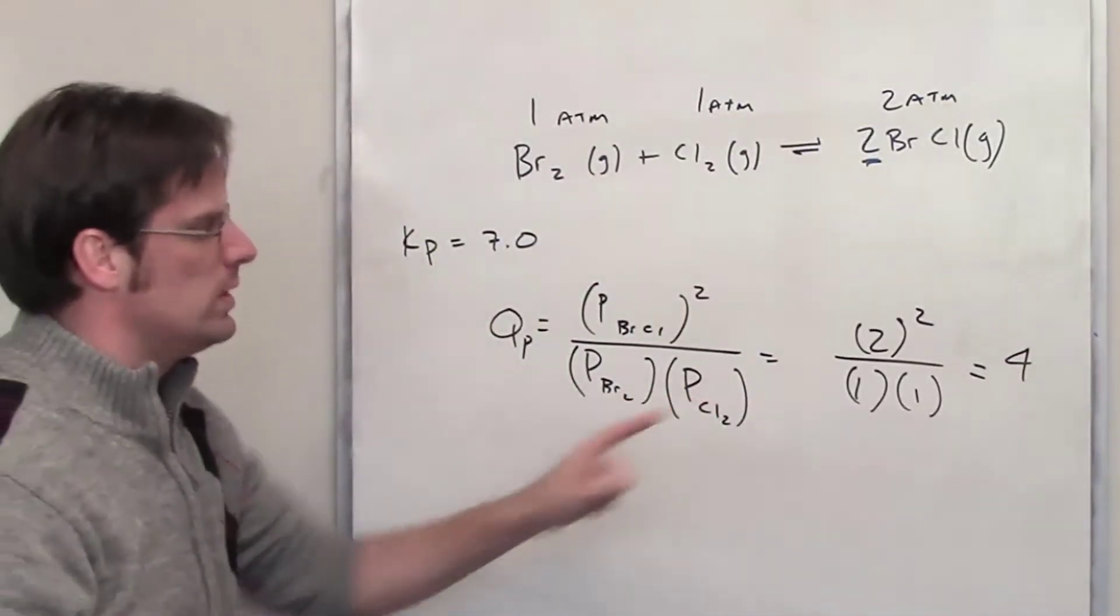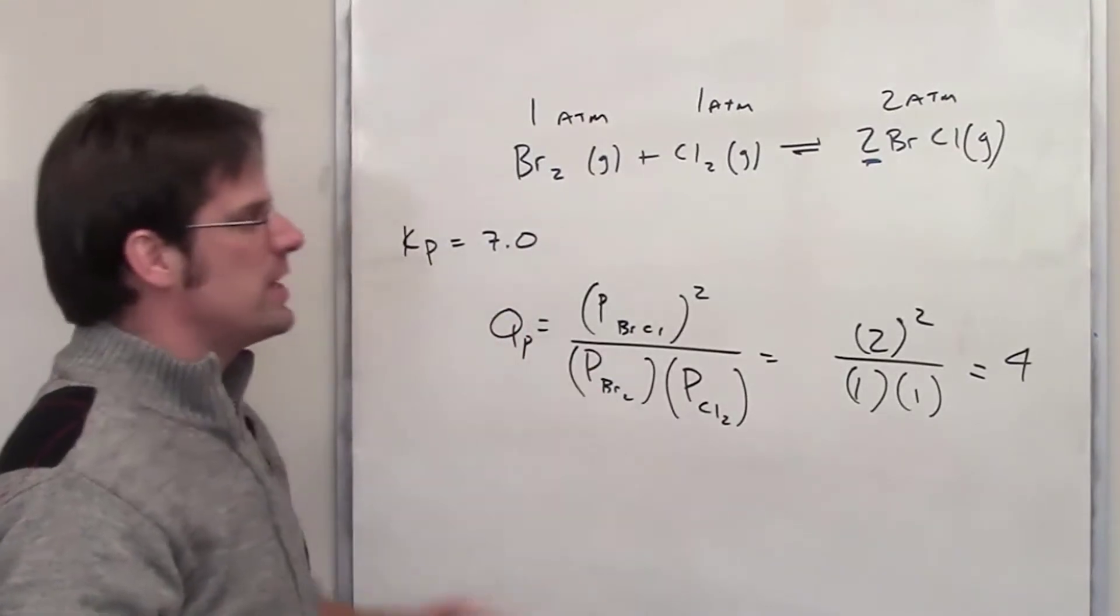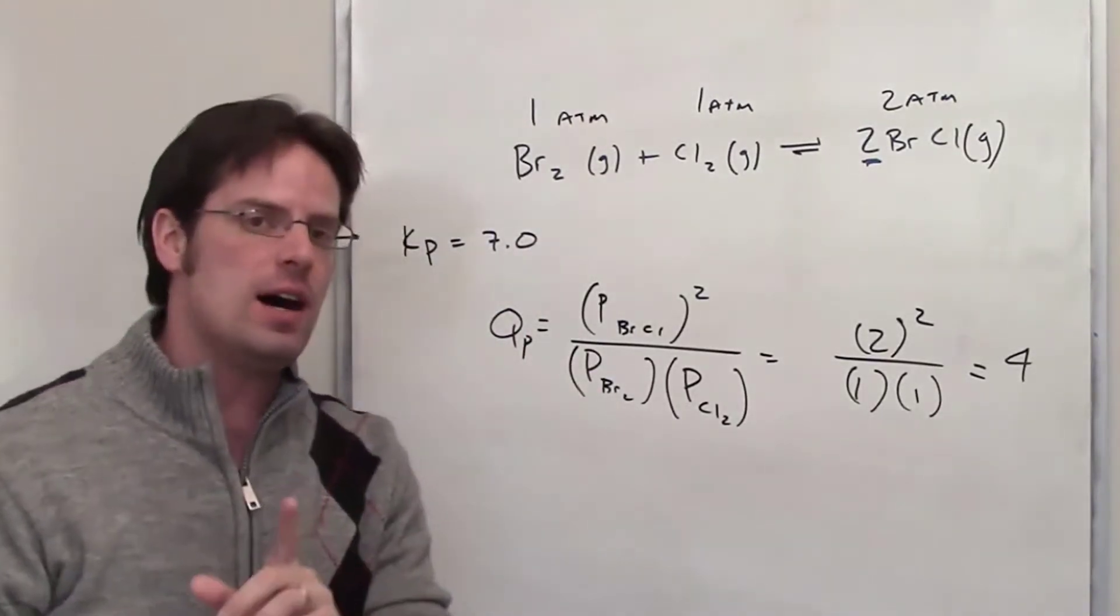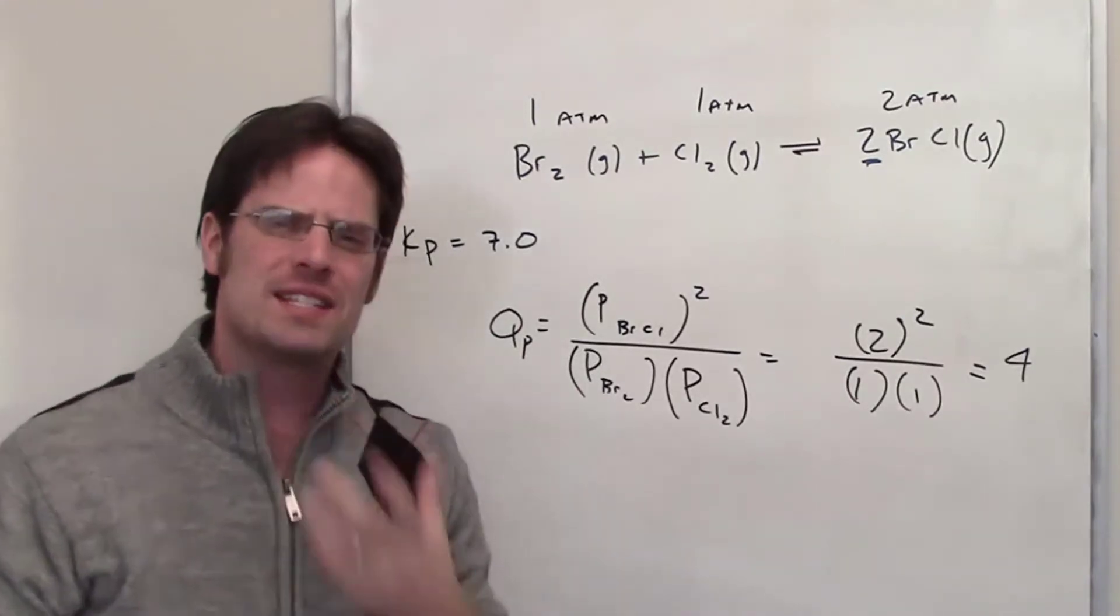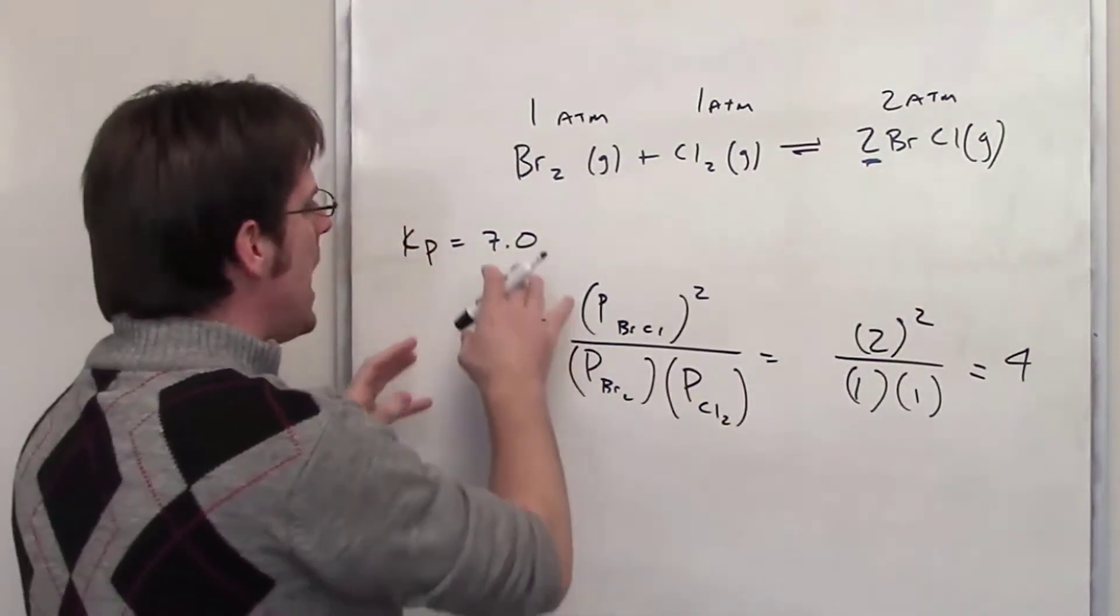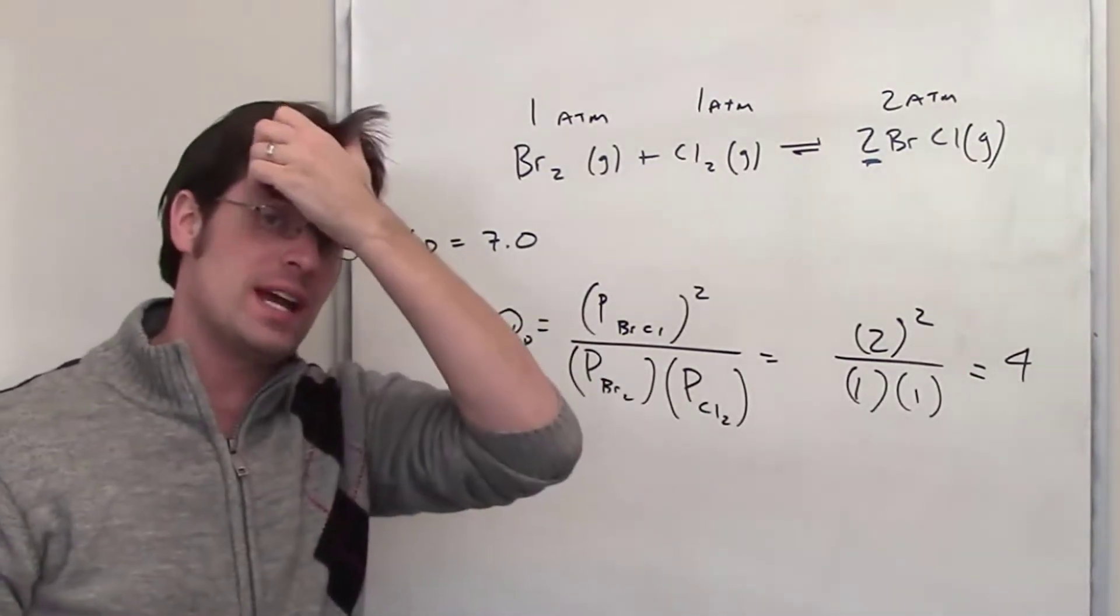So this is Q, the reaction coefficient at this particular moment in time. It is not obviously equal to K. So what has to happen to this reaction in order for it to become equal to K? In which direction is it going to have to drift?